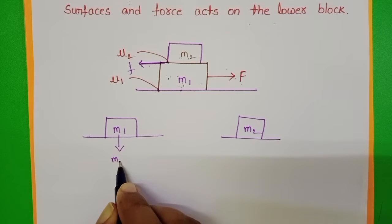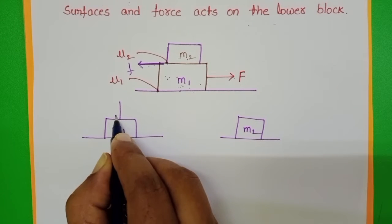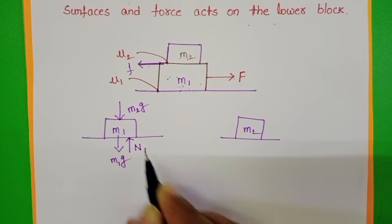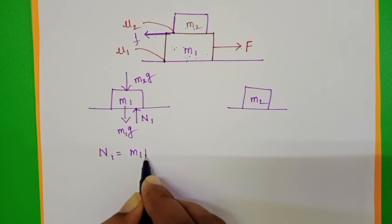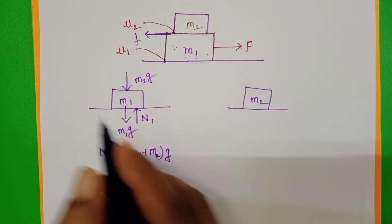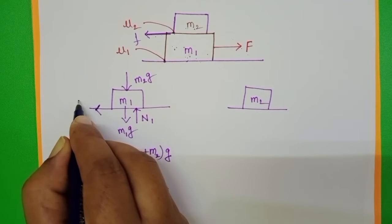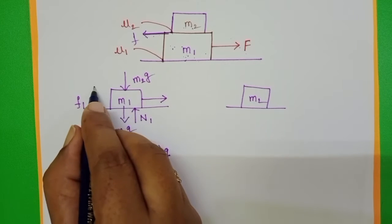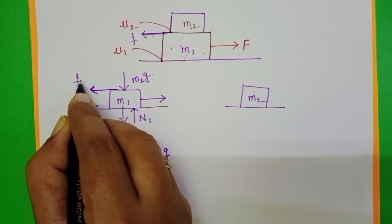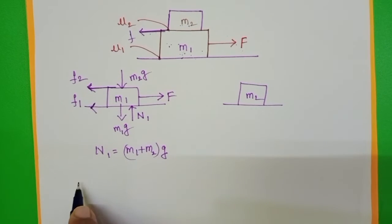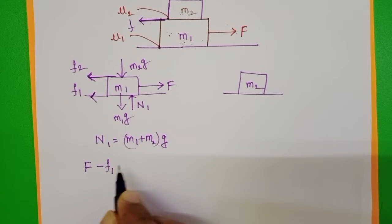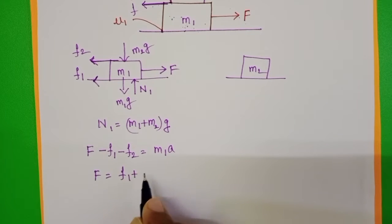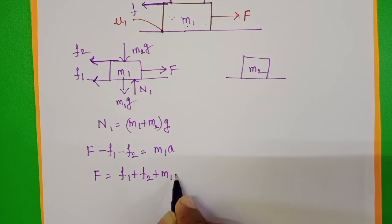Weight of m1 acts in the downward direction. At the same time, m2 also exerts its weight on m1. Normal force, let it be N1. N1 equals (m1 + m2) times g. Along this direction, frictional force f1 acts in the opposite direction to the motion of m1. Between the blocks also frictional force exists, let it be f2. This is the external force. Applied force minus f1 minus f2 equals m1*a, so F equals f1 plus f2 plus m1*a. Let this be equation 1.